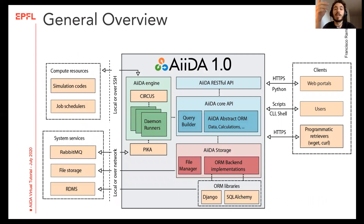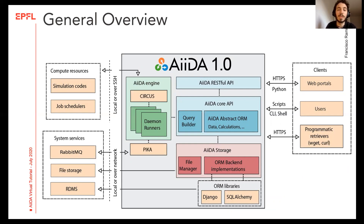Here we can see how the different functions of AIDA are organized internally. On the right you have the different interfaces you can use to interact with the AIDA installation — both the ORM and the command line, as well as some other options. On the left you can see the engine that is in charge of managing the daemons that run in the background and keep track of your active calculations. Finally, there is also the internal storage consisting of a file repository and an internal database where all the information of the provenance is stored.